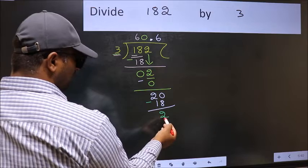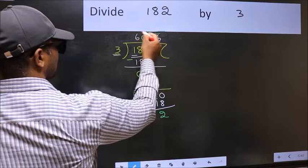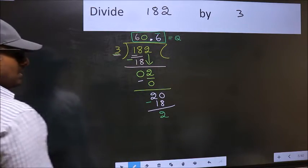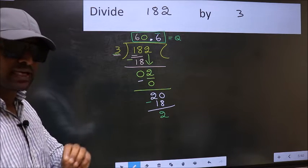We got 2 again. That means we get a bar on this number. So, this is our quotient. Did you understand where the mistake happens? You should not do that mistake.